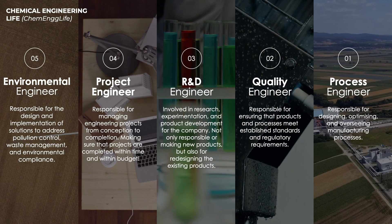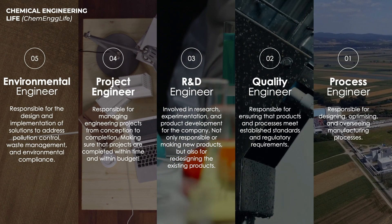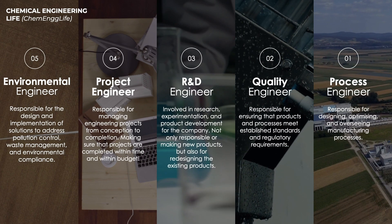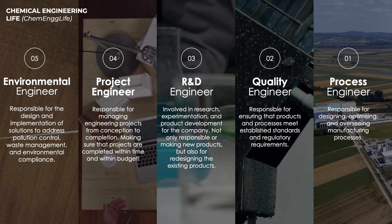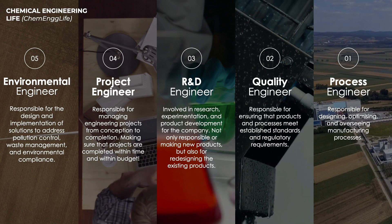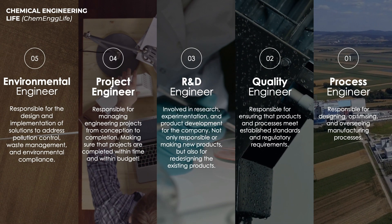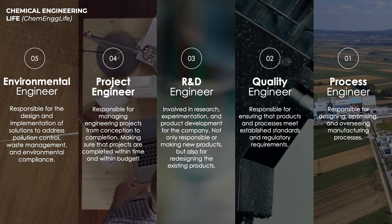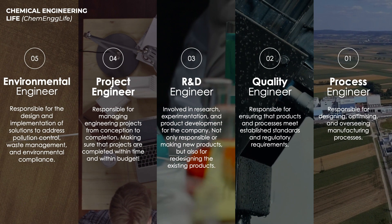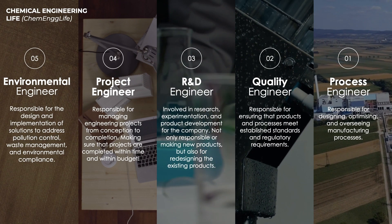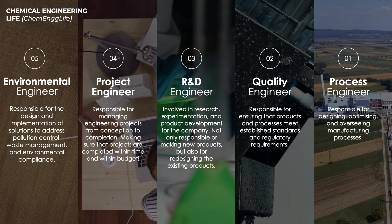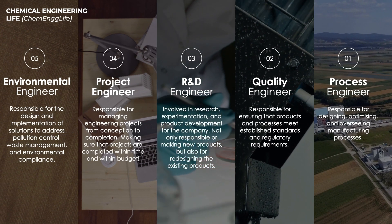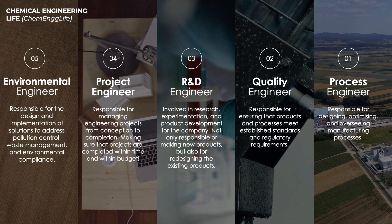The job role at number 1 is Process Engineer. Process engineers are the professionals responsible for designing, optimizing, and overseeing manufacturing processes. In short, these are the professionals who make sure that production runs as it should and as effectively as possible. It is undoubtedly one of the most common job roles for chemical engineers, and almost every single chemical engineer ends up working as a process engineer at one point in their career.